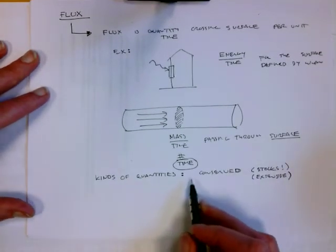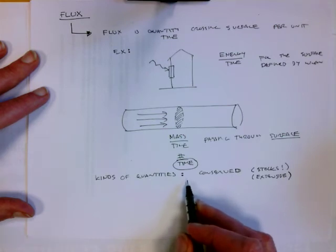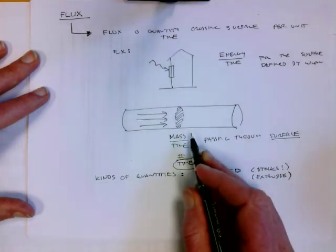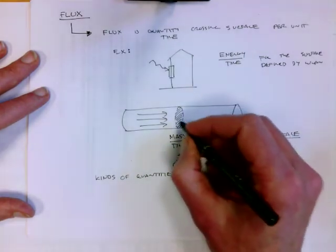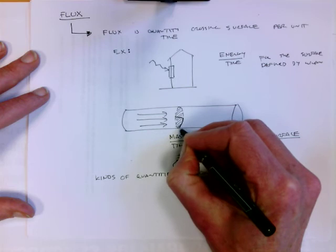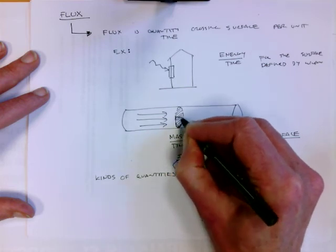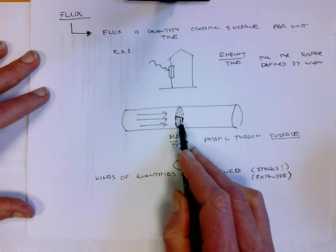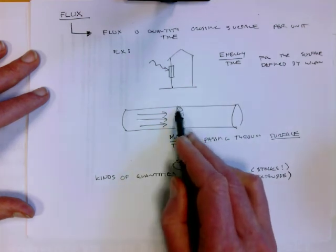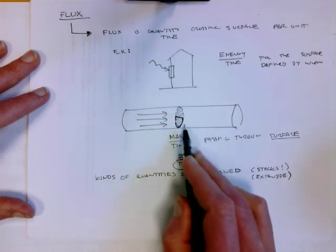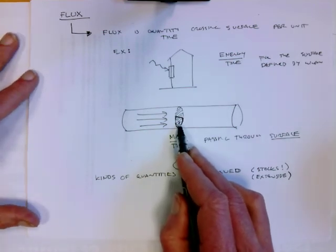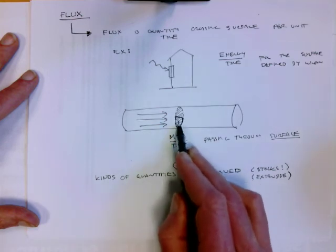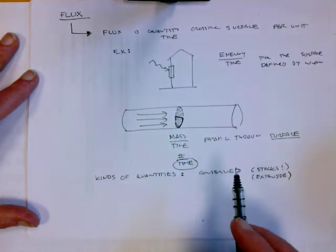One important thing to note is that flux, because it is defined for a surface, actually depends on what surface you choose. If I chose just the lower half of the surface in my pipe, there is less flux through that surface than through the entire surface. The flux density through the surface is the same—there is the same amount of mass per unit time per unit area—but the actual flux through the smaller surface is smaller.